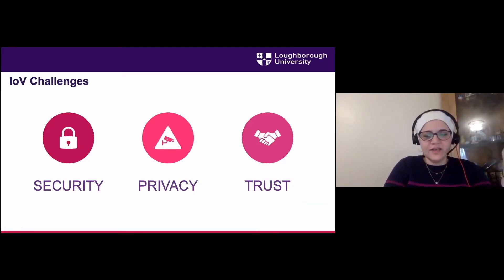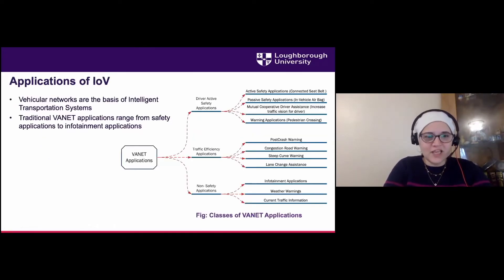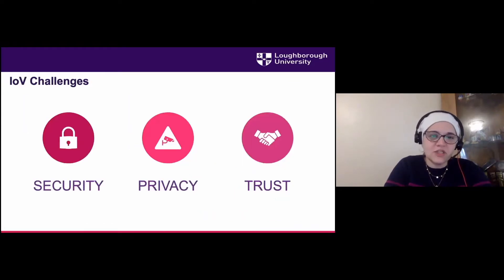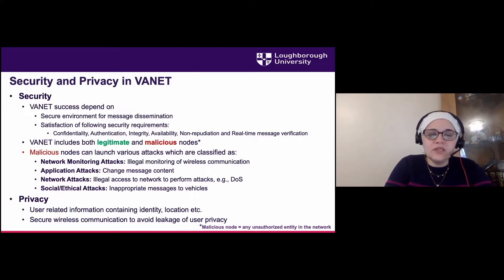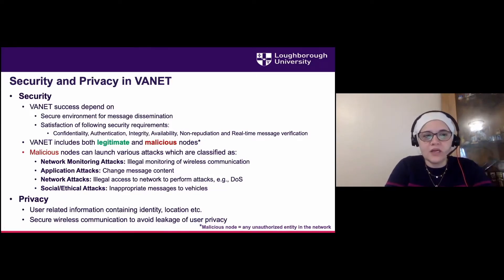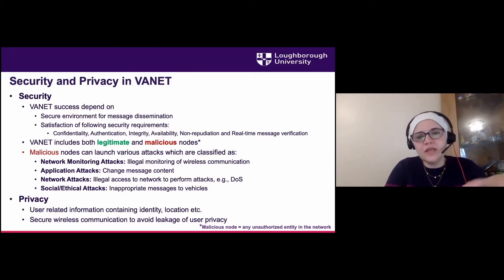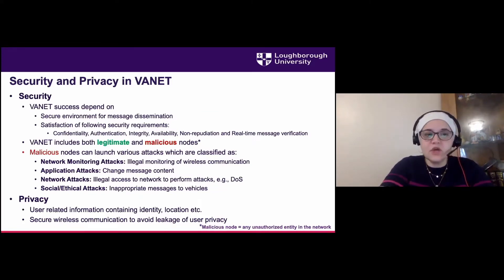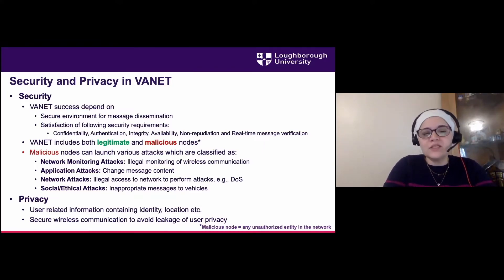What we're interested in is the security problems when developing those applications. There are security challenges, privacy challenges, and trust challenges. On the security side, when sharing messages between cars we need to ensure that the environment for disseminating messages is secure — ensuring confidentiality, authenticity, integrity, and availability of the message, so that all authorized nodes can access the information on time.